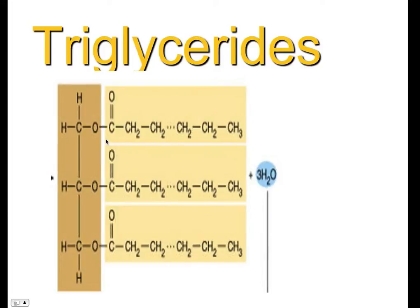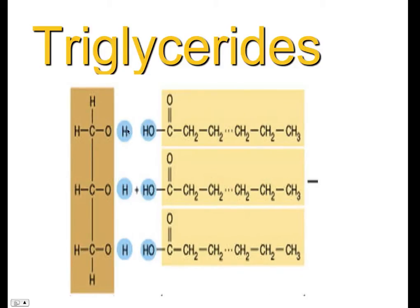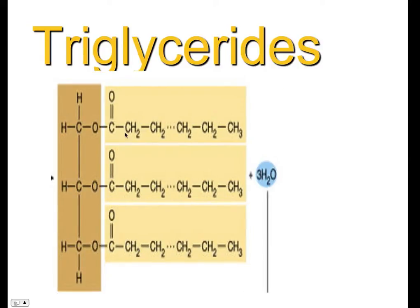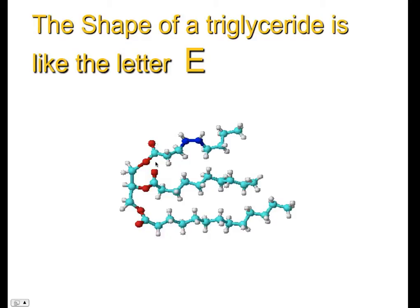Here's what they look like when they get put together. It doesn't look much different, but you notice there's water over here. That's because there's an OH and H that pull off, and then the O and the C bond together. The same thing happens three times, which is why there are three waters released as they bond together. So this is a triglyceride — it's kind of this E-shaped thing. Here's the glycerol, and these are the three fatty acids, giving you that E shape.